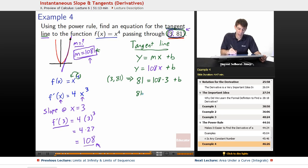So, we plug in 3 comma 81. So, that's 81 for our y value equals 108 times 3 for our horizontal value x plus b. 81 equals 108 times 3. That comes out to be 324 plus b. 81 minus 324 is negative 243 for our b.